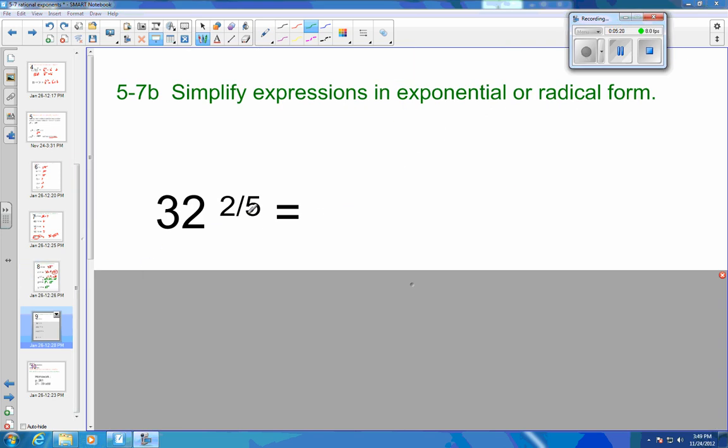So last few examples here, 32 to the 2/5 power. I'm not sure how you want to go about this one. I'm going to rewrite this as, well, I know 32 is 2 to the 5th, and then that's going to be to the 2/5 power. And when you take an exponent to an exponent, you would multiply. So this would be 2 to the 5 times 2/5, which would be equal to 2 squared, which is equal to 4.